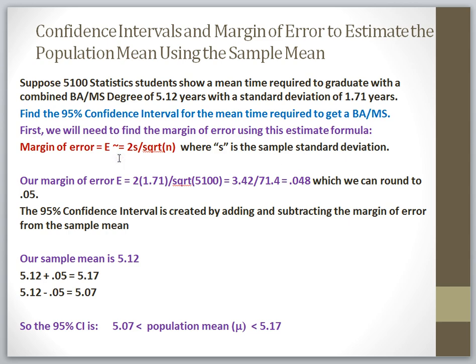So for this particular problem, our margin of error can be estimated by multiplying two times our sample standard deviation, which is 1.71, divided by the square root of our sample size, which is 5,100. So when you make this calculation, find the square root of 5,100 first. That's 71.4. Then multiply two times 1.71. That's 3.42. And then do the division and you'll get your margin of error, which is 0.048. I'm going to take 0.048 and I'm going to round it up to 0.05.